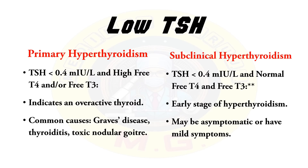Subclinical hyperthyroidism also presents with TSH levels less than 0.4 milli-international units per litre, but with normal free T3 and free T4. It is the early stage of hyperthyroidism and may be asymptomatic or with mild symptoms.